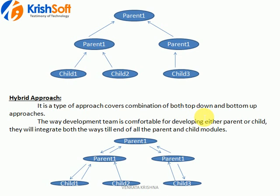The last one is the hybrid approach - a mixing of top-down and bottom-up. Based on convenience to the development team, they may develop the parents or the children in whatever order they want and integrate accordingly. For example, a child may integrate with a parent, then another parent integrates, and then they develop another child. Hybrid is based on the development team's feasibility, integrating in whatever order they want according to their design. These are all three approaches: top-down, bottom-up, and hybrid.